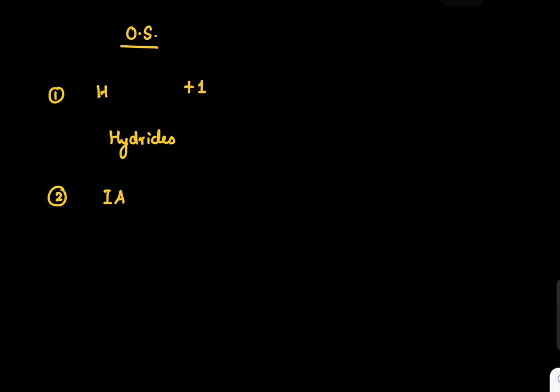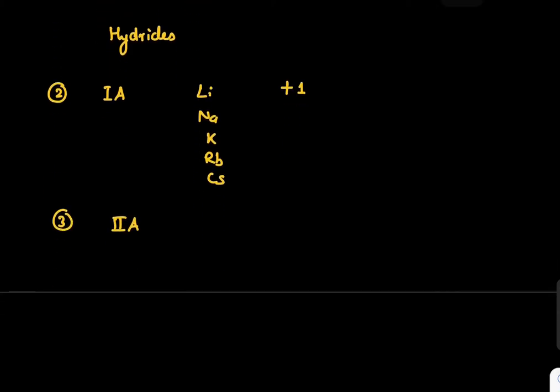If it is a Group IA member like lithium, sodium, potassium, rubidium, cesium, they will show +1 oxidation state. Similarly, if it is a Group IIA member - beryllium, magnesium, calcium, strontium, barium - they will show +2 oxidation state.